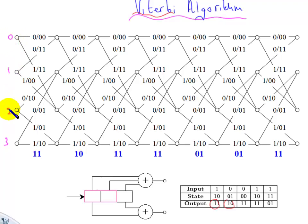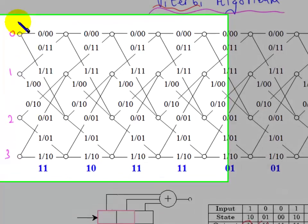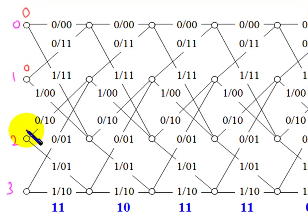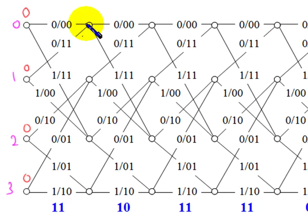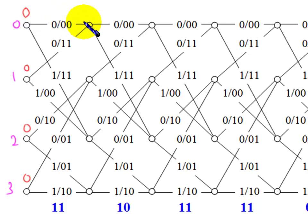So this is state 0, 1, 2, 3, and I'm going to write a number 0 there, which is referred to as the metric. This will make sense as we move along. What we do is look at the very first state and the branches coming in — this is the lower branch, this is the upper branch. This is a branch code word, this is a branch code word, and this is the received word.